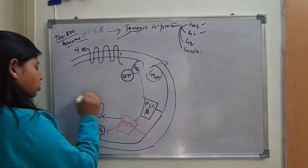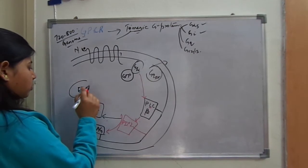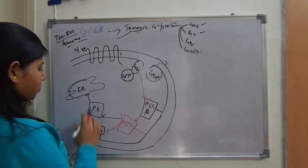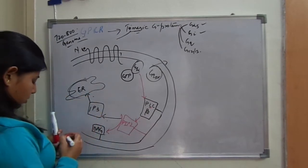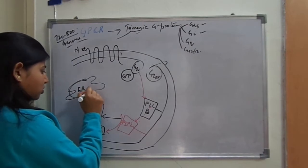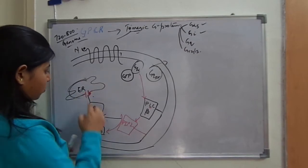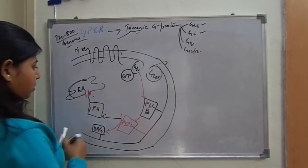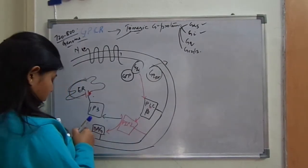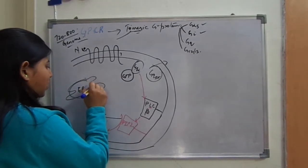The DAG molecule remains attached to the membrane itself, while the IP3 molecule moves inside the cell and goes to the endoplasmic reticulum. On the surface of the endoplasmic reticulum there are certain channels, and when IP3 comes and binds to these channels, they open — these are actually calcium ion channels.